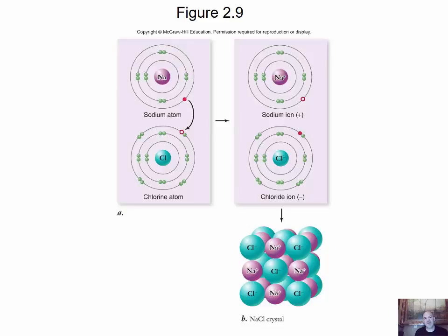Here's a model representing the same thing with dot structures. Here's the full sodium atom with its one valence electron, and here's the chlorine atom with its full set of electrons — seven valence electrons and one more needed. During the reaction, sodium loses its electron and it goes into chlorine's valence shell. The result is a sodium ion that is missing its valence shell.